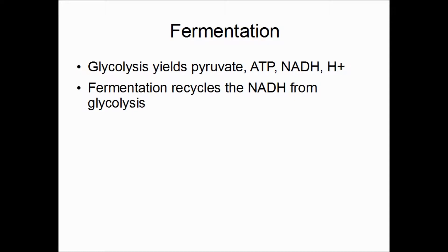When oxygen is present, or when there is an electron transport chain, all of these products go into the process of aerobic respiration. But when there is neither oxygen nor an electron transport chain, the cell makes an effort to recycle the NADH that was used in glycolysis. This resets the process so glycolysis can take place again as long as more glucose is provided.